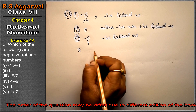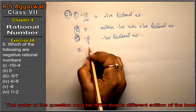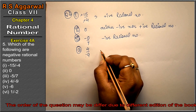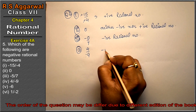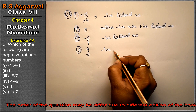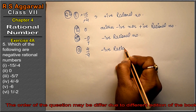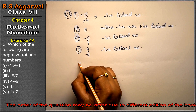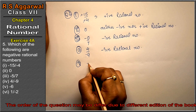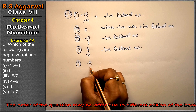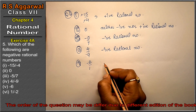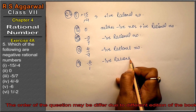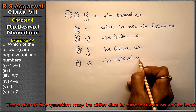Fourth part is 4 upon minus 9. There is a negative sign, so it is a negative rational number. Fifth part is minus 6. We can write minus 6 as minus 6 upon 1 — there is one negative sign, so it is also a negative rational number.